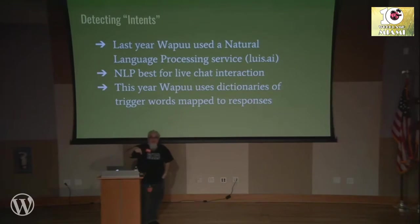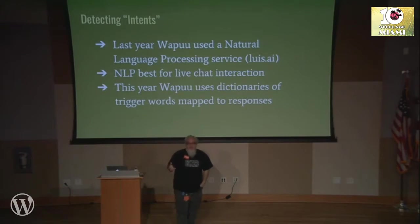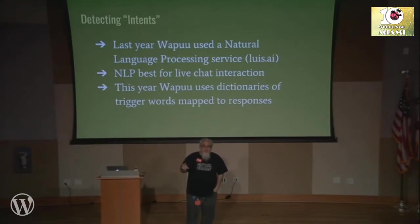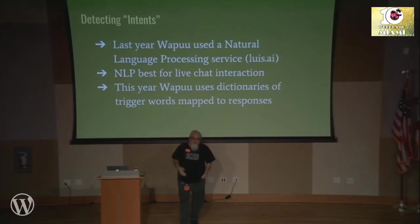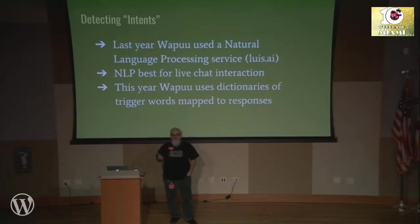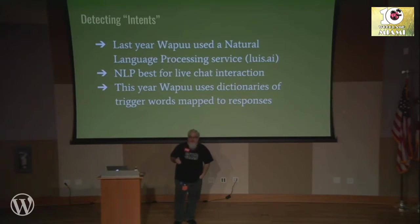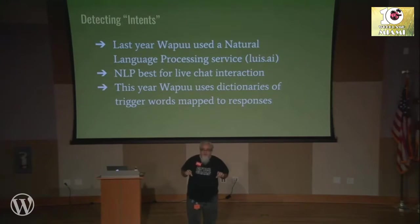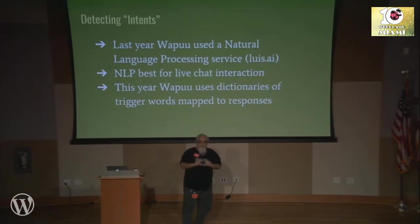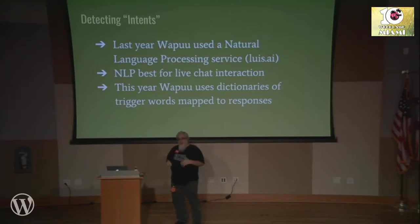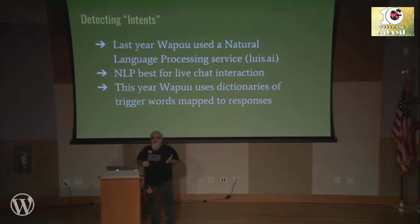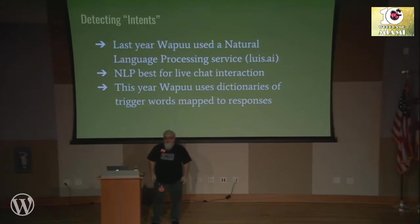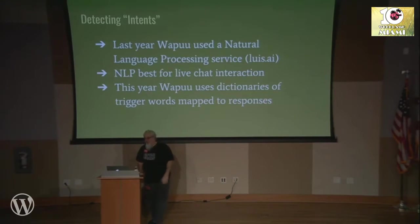Last year, I used a natural language processing service — this is where people are actually using what they call AI nowadays, machine learning or whatever. There's luis.ai, built by Microsoft, and wit.ai, built by Facebook. You can configure different phrases to determine what somebody is trying to get at. I used that last year and it worked pretty well, but then I started having to do exceptions. So I ended up putting in keyword searches anyway, and I just ditched the natural language processing this year. In the JavaScript app I just built a bunch of keywords and respond with this, or a random GIF image or something.